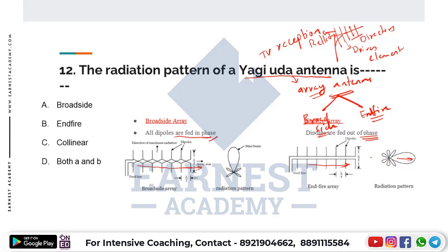The radiation pattern is parallel to the axis. If you see the maximum radiation direction, the axis is perpendicular in broadside but parallel in end-fire. Option B is the correct answer. For a Yagi-Uda antenna, the major lobe is parallel to the axis of the array antenna — it is end-fire.